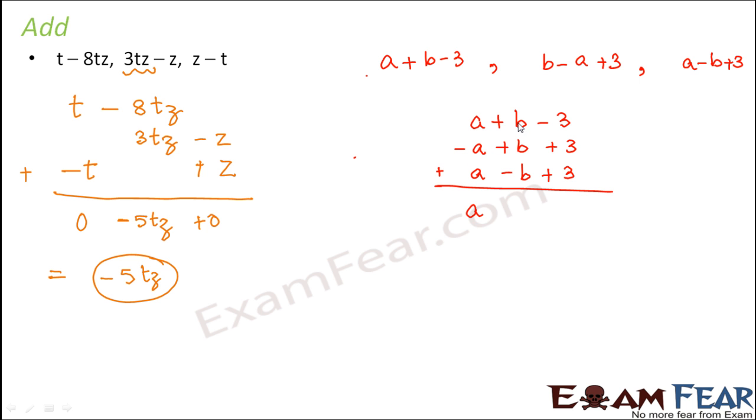Similarly, here, b plus b gives 2b. Again, you subtract 1b from there. So you are left with b. In this case, 3 plus 3 gives you 6. But you again subtract 3 from there. So you are left with 3. So this would be the sum of the three expressions.